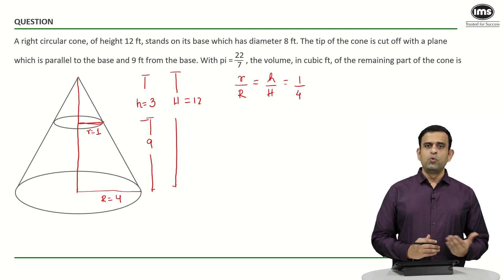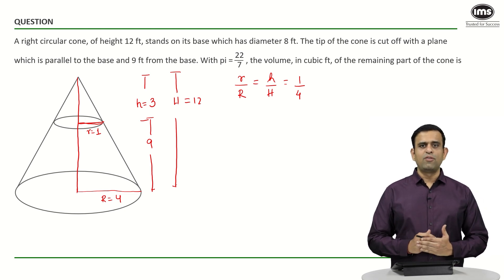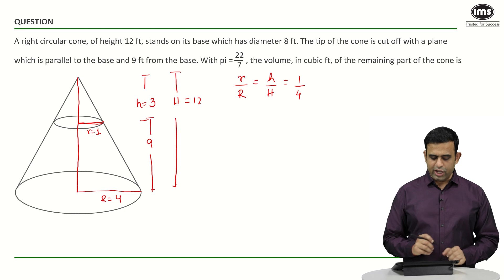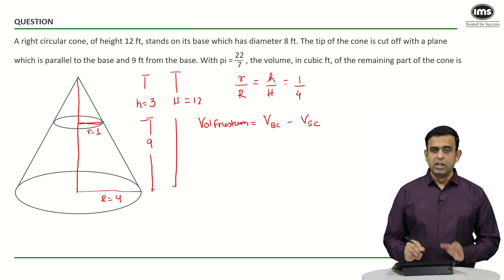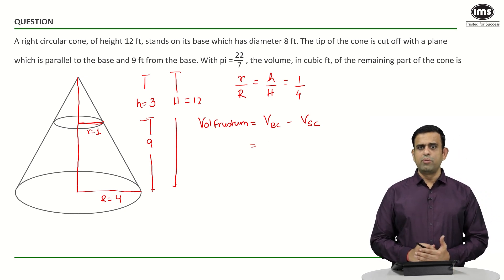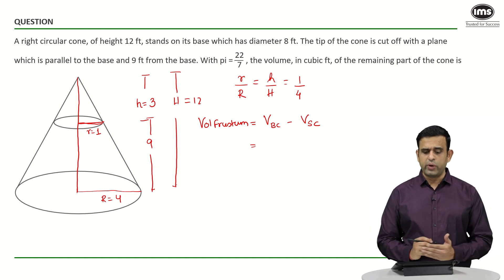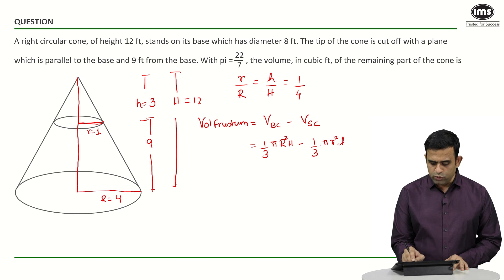To find the volume of the frustum, we find the volume of the bigger cone and subtract the volume of the smaller cone. The volume formula is 1 by 3 pi r squared h. So for the bigger cone it is 1 by 3 pi capital R squared into H, and for the smaller cone it is 1 by 3 pi small r squared into small h.